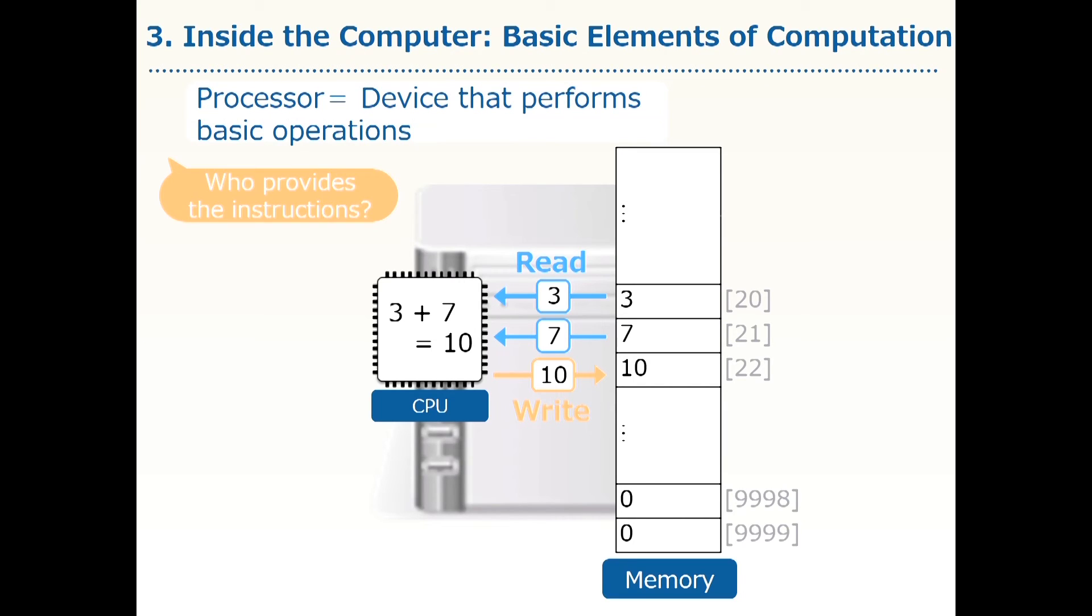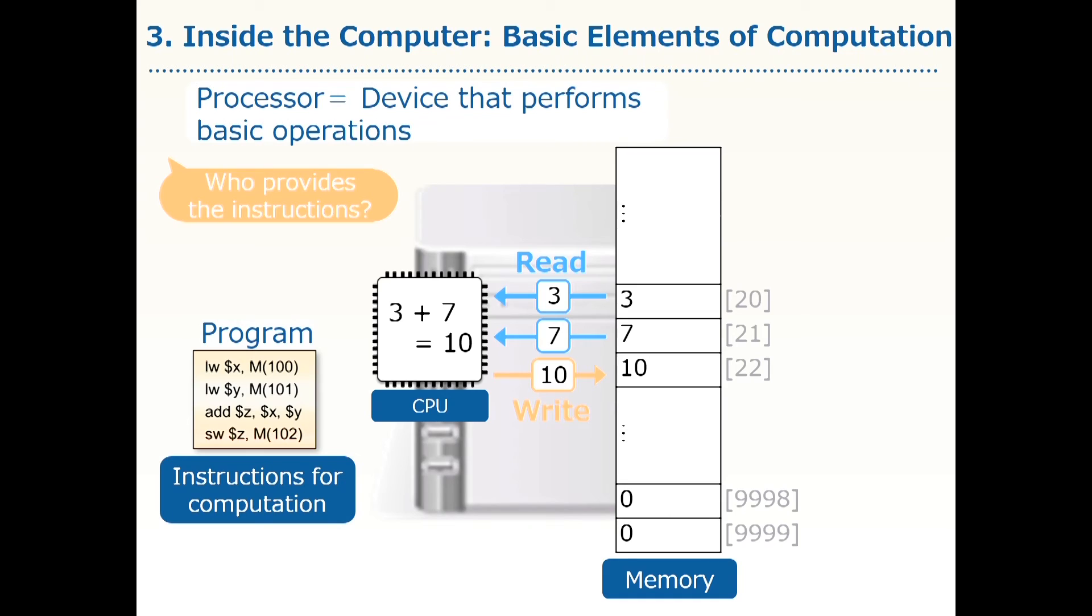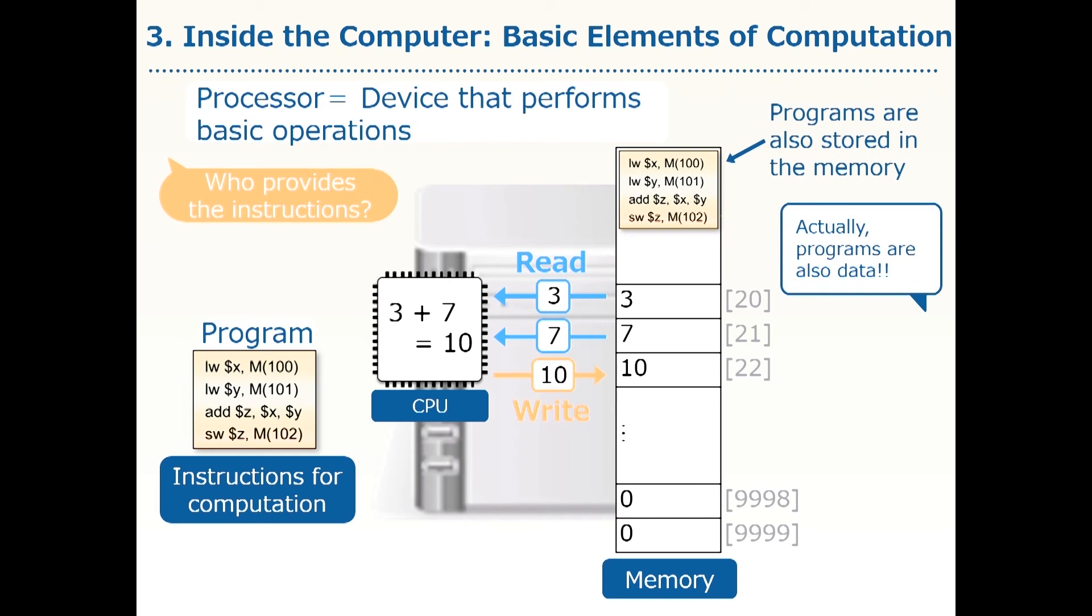You might be wondering, who provides instructions for these computations? A program. A program provides instructions. It carries the meaning of instructions for computation. Programs also happen to be stored in the memory. In fact, programs are one type of data. Following the program given in the memory, computer achieves required computations.